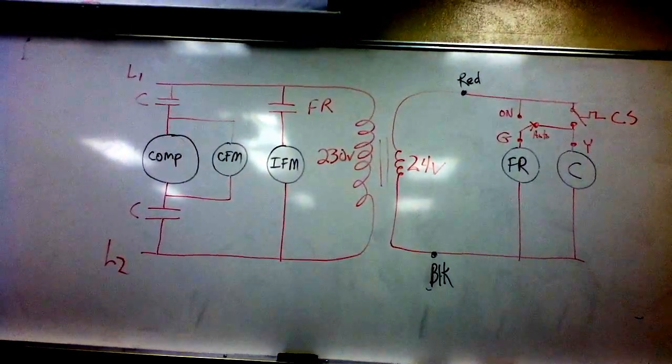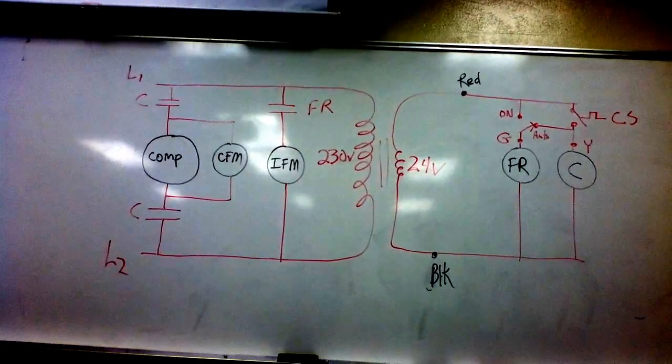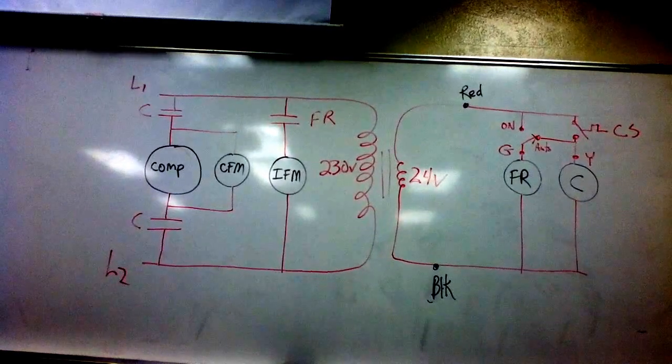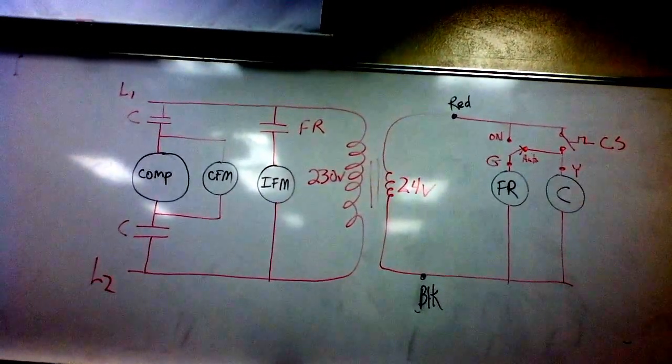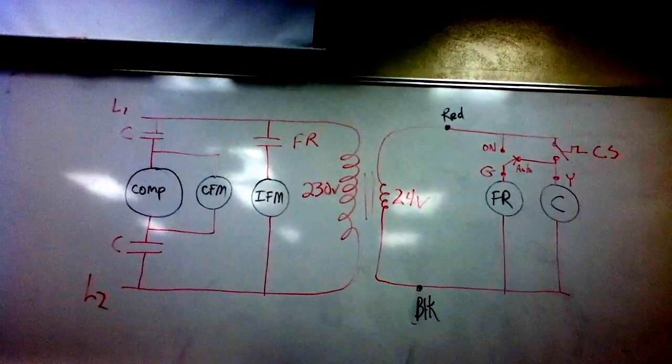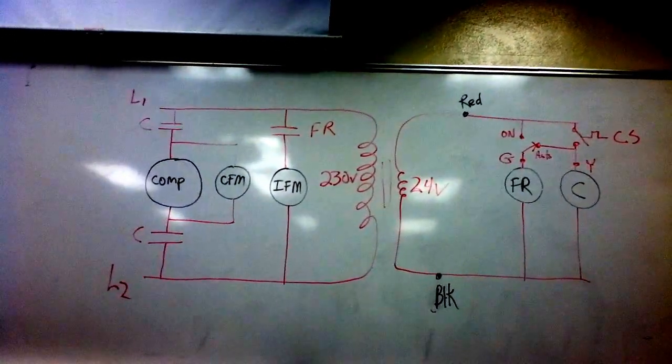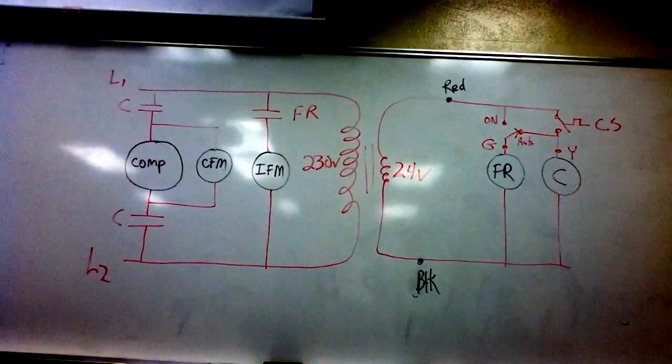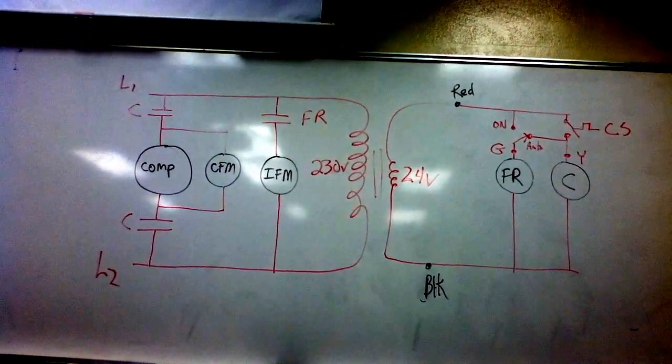Now I once made a mistake and said electricity traveled at 186,000 miles a second - speed of light. So I'll just say electricity is very fast. It goes so fast that as soon as you put power to it, their coils are going to come on within nanoseconds of each other.